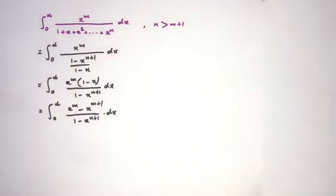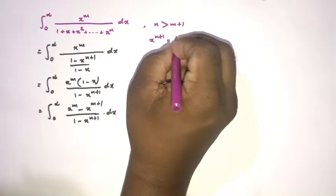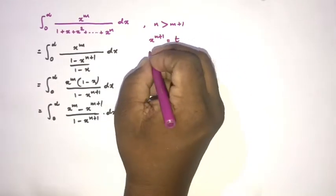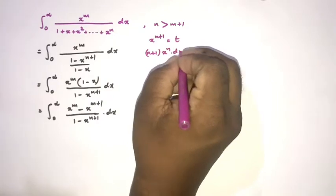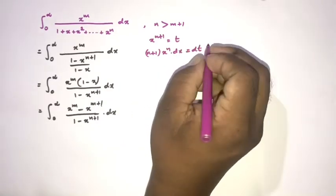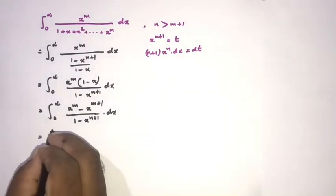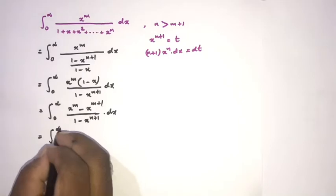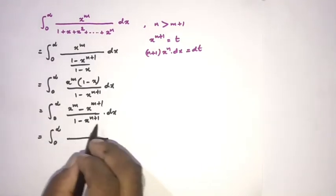Then we use a substitution: let x to the N+1 equal t. Differentiating gives (N+1) x to the N dx = dt. The limits remain 0 to infinity, so we can write the integral from 0 to infinity with 1 minus t in the denominator.